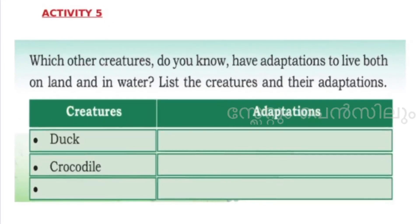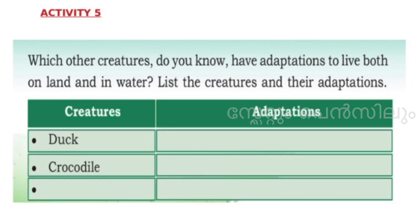Activity 5 is already done. Which other creatures do you know that have adaptations? Besides tortoise and frog, other creatures with special adaptations include duck, crocodile, and crab.